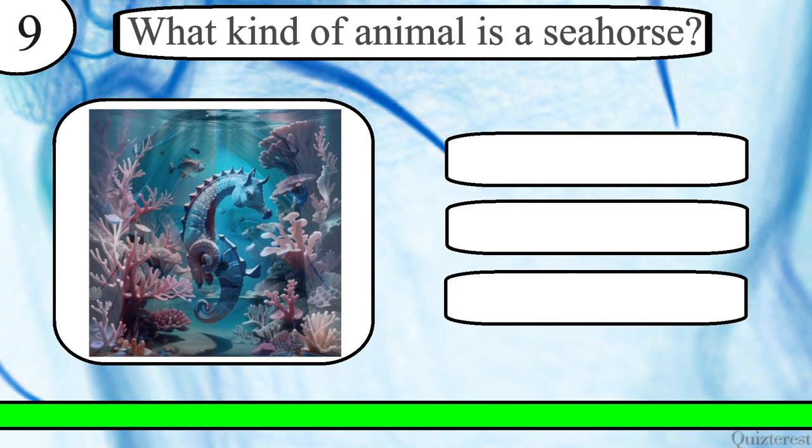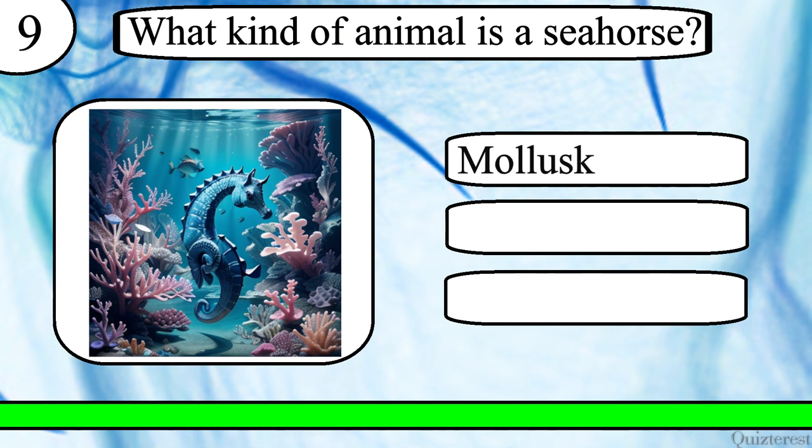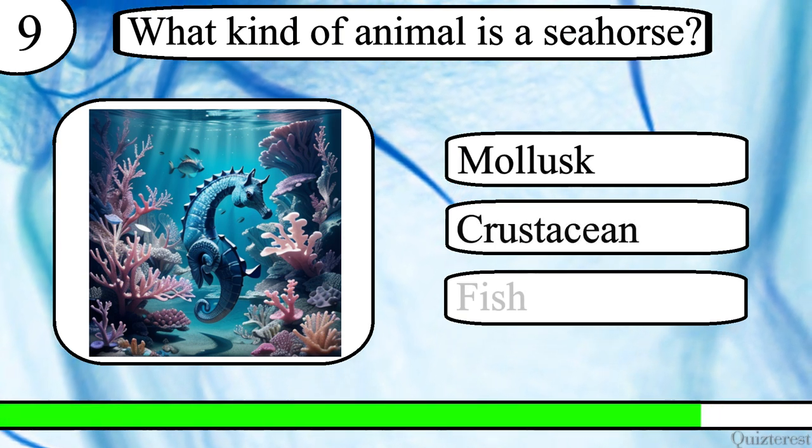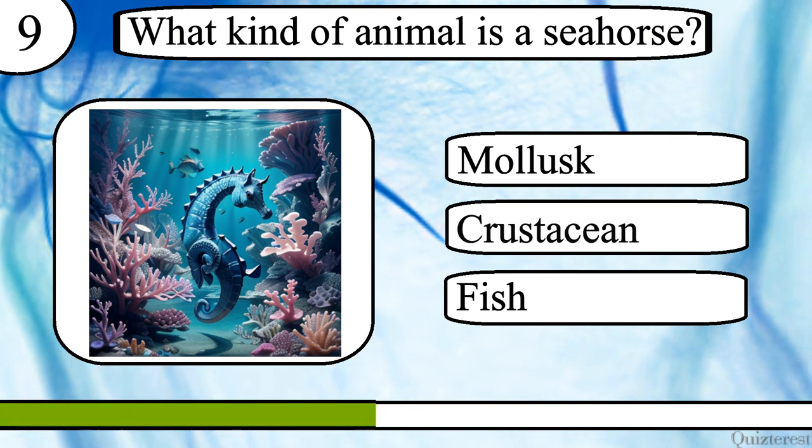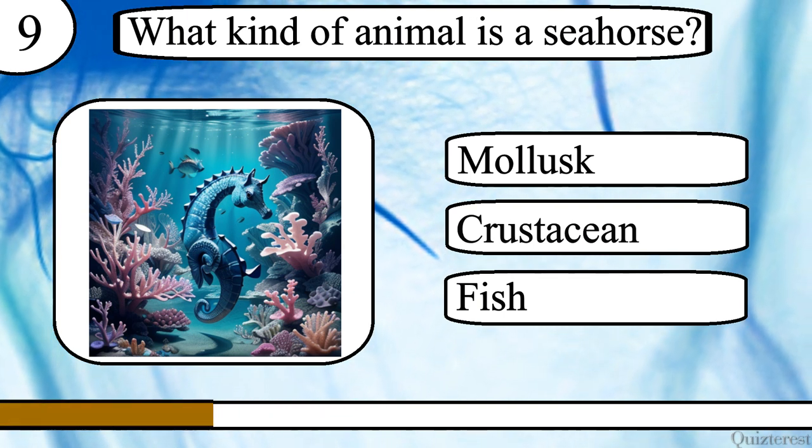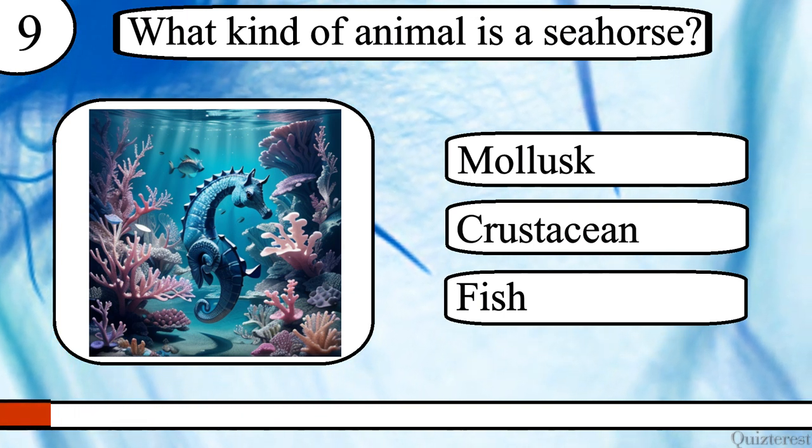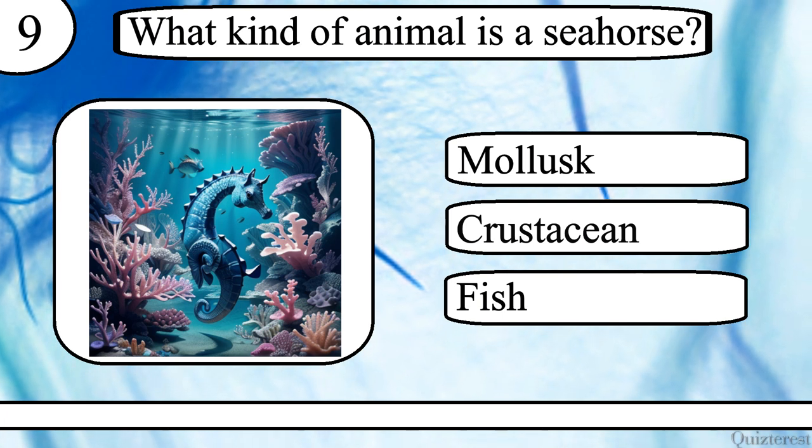Question 9. What kind of animal is a seahorse? Mollusk, crustacean or fish? The correct answer is fish.